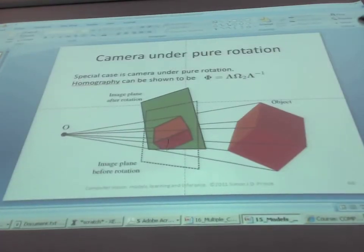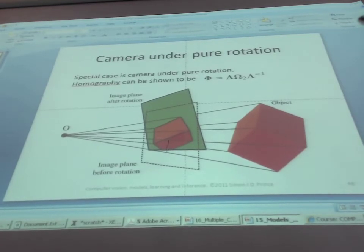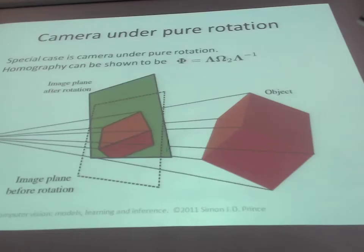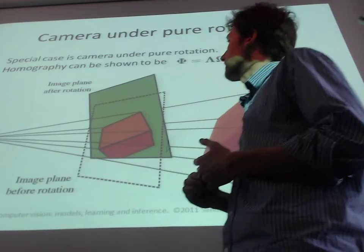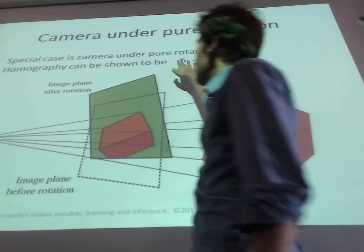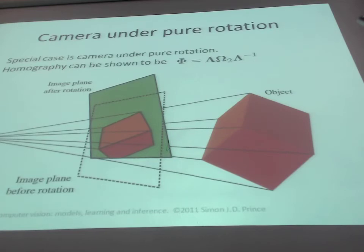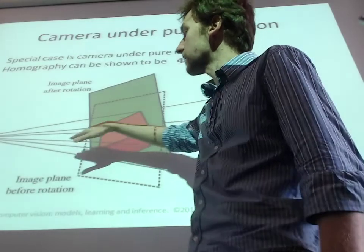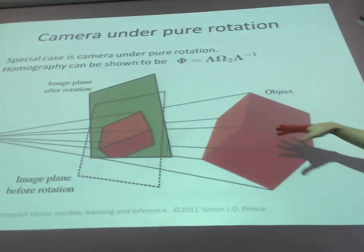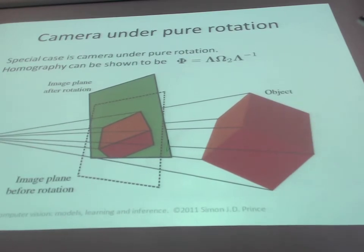We wanted to finish off from last week. We wanted to finish off the fact that when we have a homography that we can calculate for various situations — situations where we're either looking at a world that's completely planar and moving around looking at it from different angles, or restricting our movement and only rotating around the optical center, looking at a potentially very complex object. We could compute a homography that would do the mapping between the images.